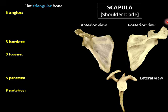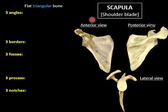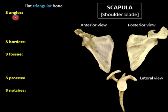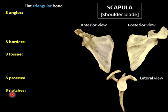The second bone is the scapula, or shoulder blade. It is a flat, triangular bone seen from anterior, posterior, and lateral views. Being triangular, it has three angles, three borders, three fossae, three processes, and three notches.